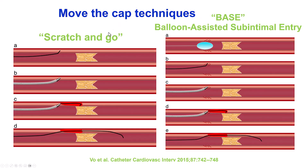There are two move-the-cap techniques. One is called the scratch-and-go, and the other is called the BASE, or balloon-assisted subintimal entry. Both have the same goal, which is to advance an antegrade guide wire into the extra-plaque space proximal to the proximal cap, but they achieve it in different ways.